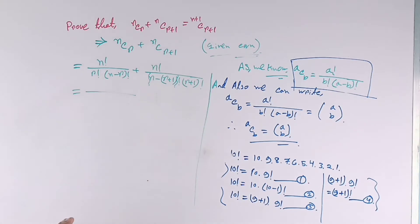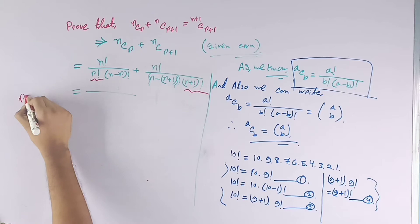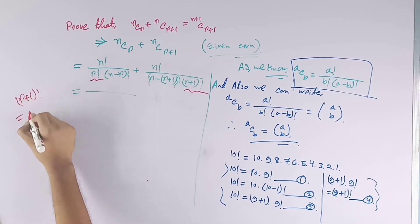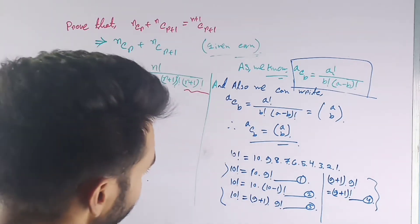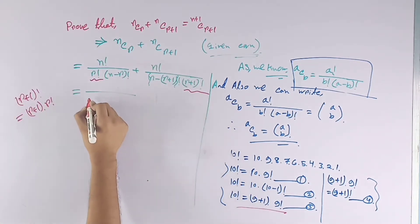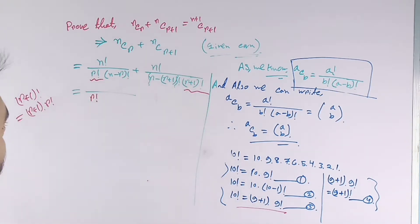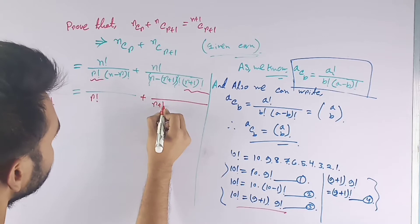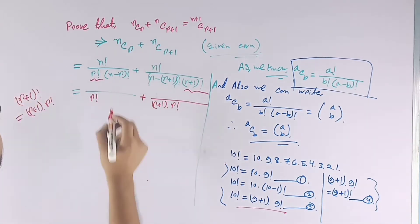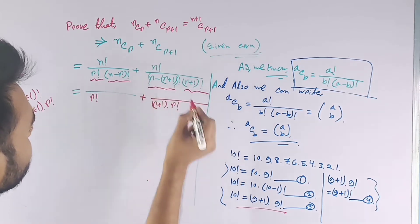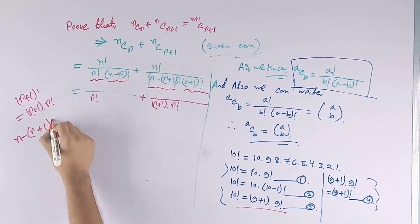Now take a common factor, using properties 1 through 4. Here we have r! and (r+1)!. Note that (r+1)! = (r+1) × r!, from property 3. So r! can be factored out. Also, (n−r+1)! = (n−r+1) × (n−r)!, which we use next.